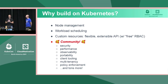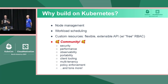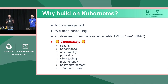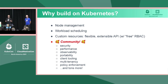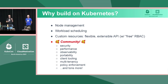Kubernetes also has a great resource in custom resources. This lets us build flexible, extensible APIs inside the Kubernetes API server and ecosystem. We basically get RBAC for free, which is another huge source of work if you don't have one built for you. And there's the long tail of community: a huge community around Kubernetes provides security, performance, observability, portability across architectures, client tooling, multi-tenancy, policy enforcement, and much more. All of these things we would have to build ourselves otherwise — instead we sit back and work on features while Kubernetes improves underneath us.